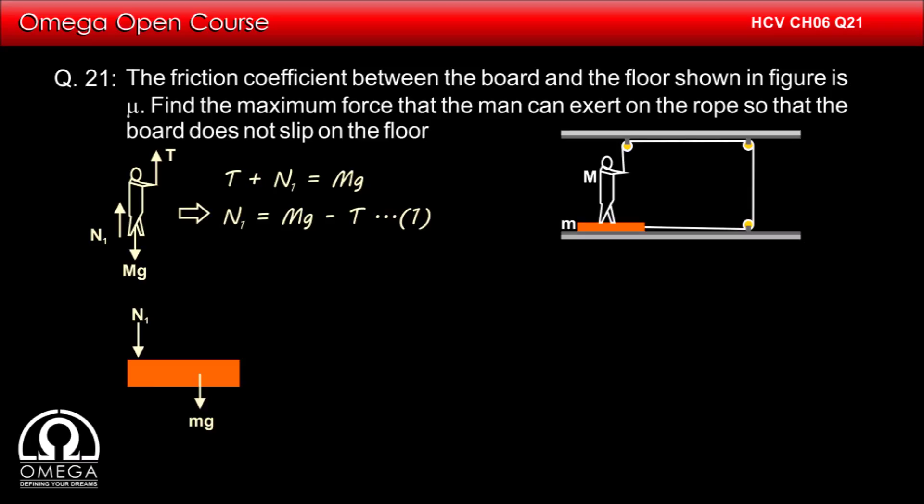The floor will apply normal contact force N2 on the board in upward direction. Since the man is pulling the rope with force T, there will be a tension T in the rope and the rope will pull the board with this tension towards right.